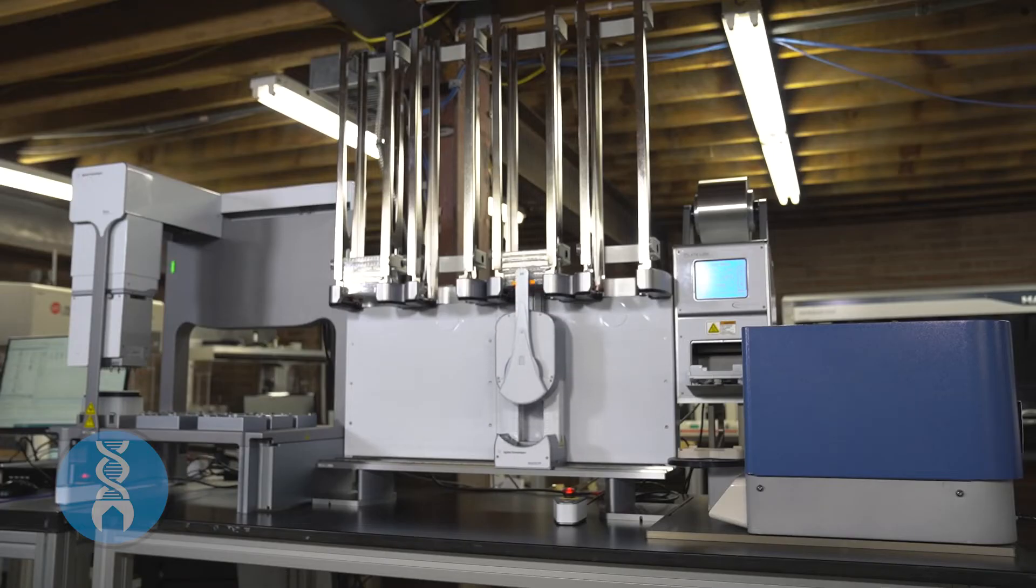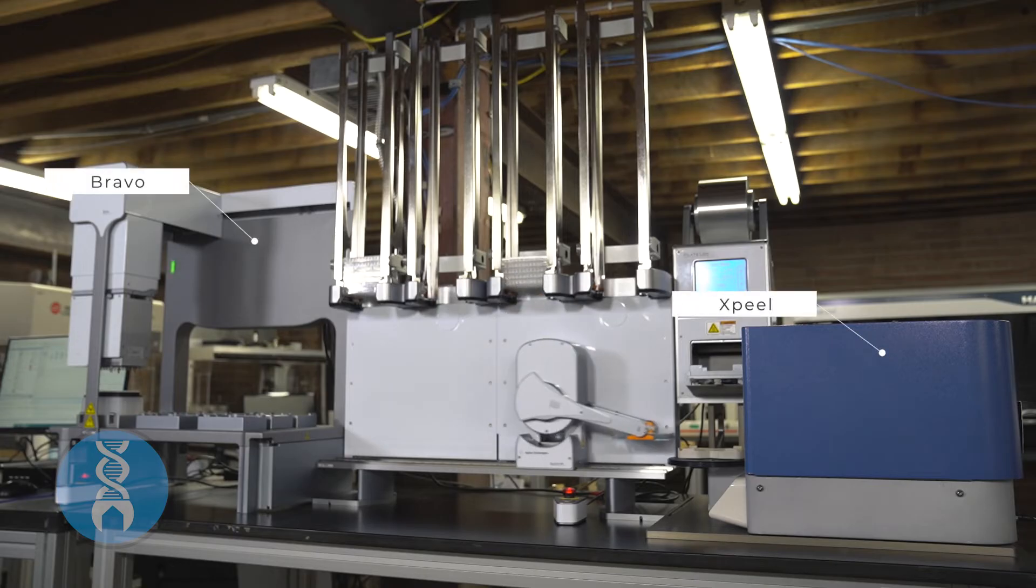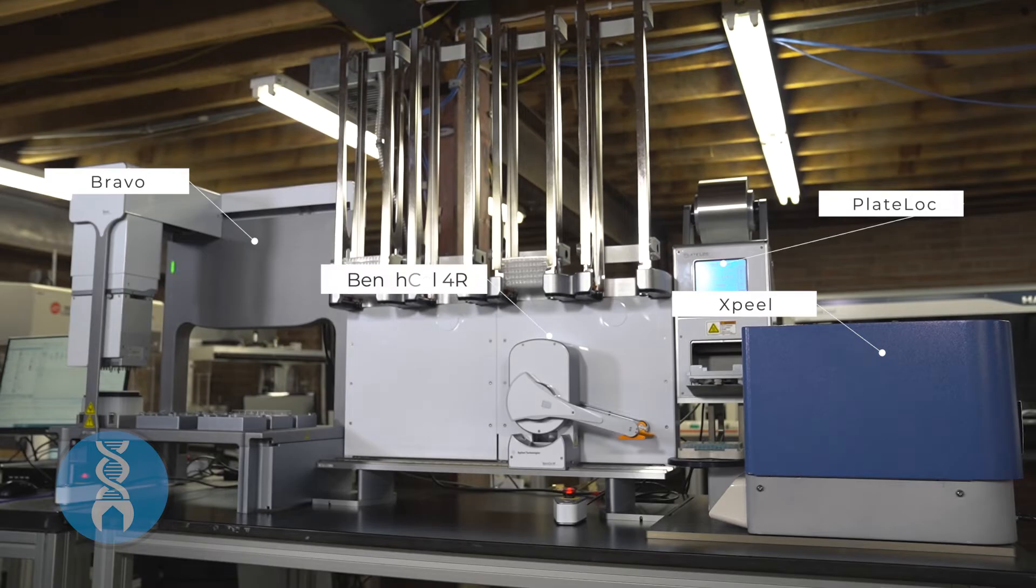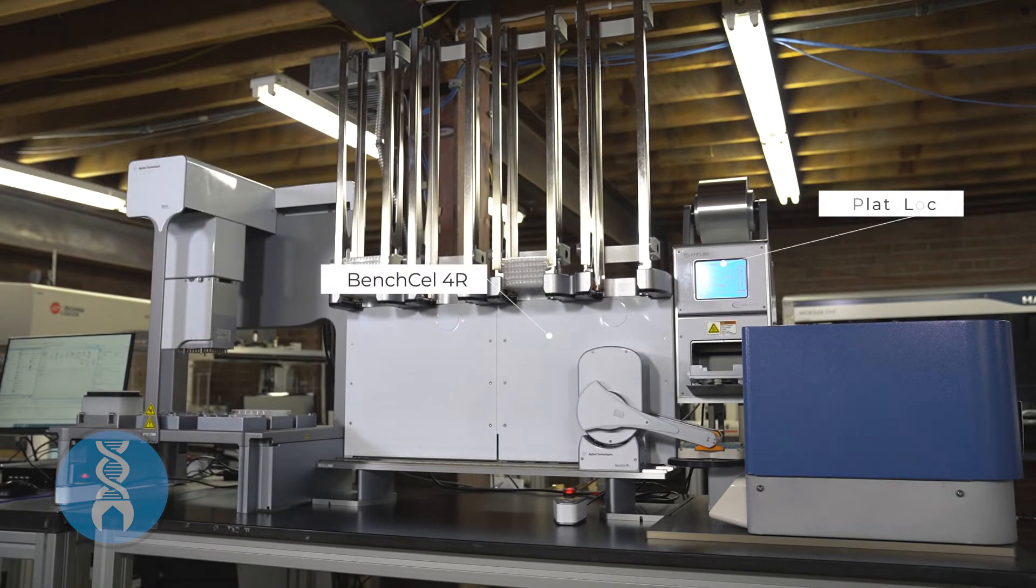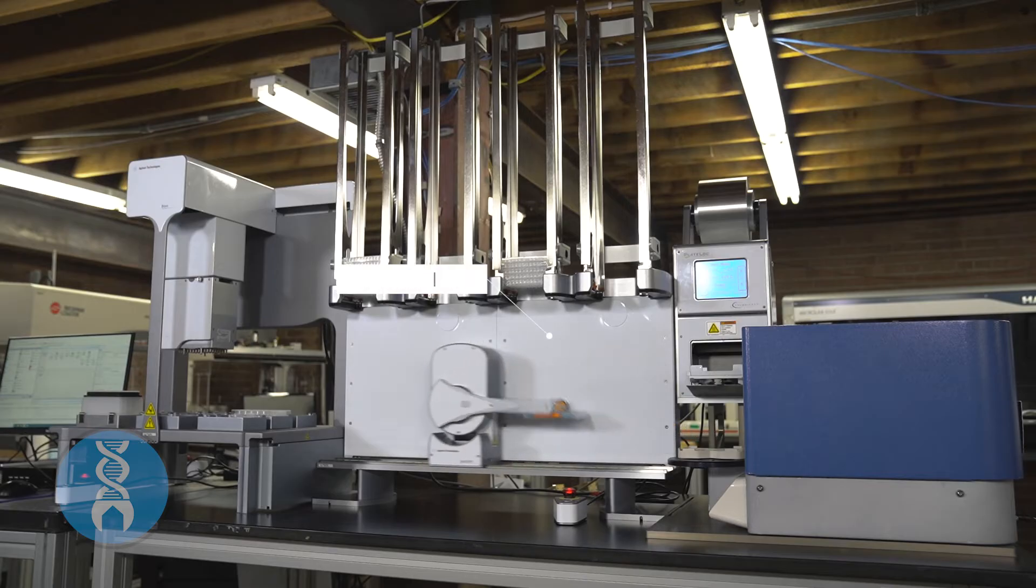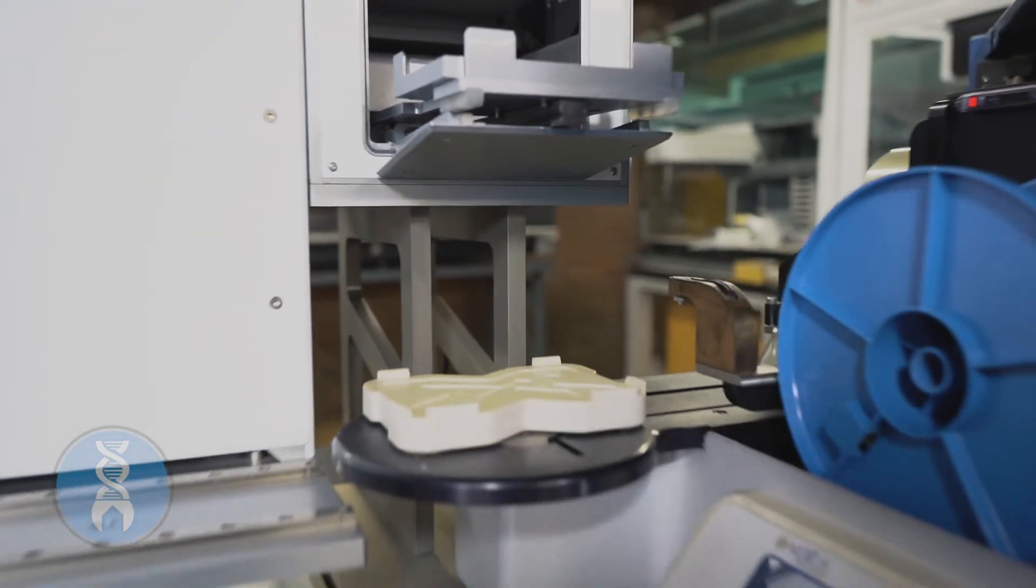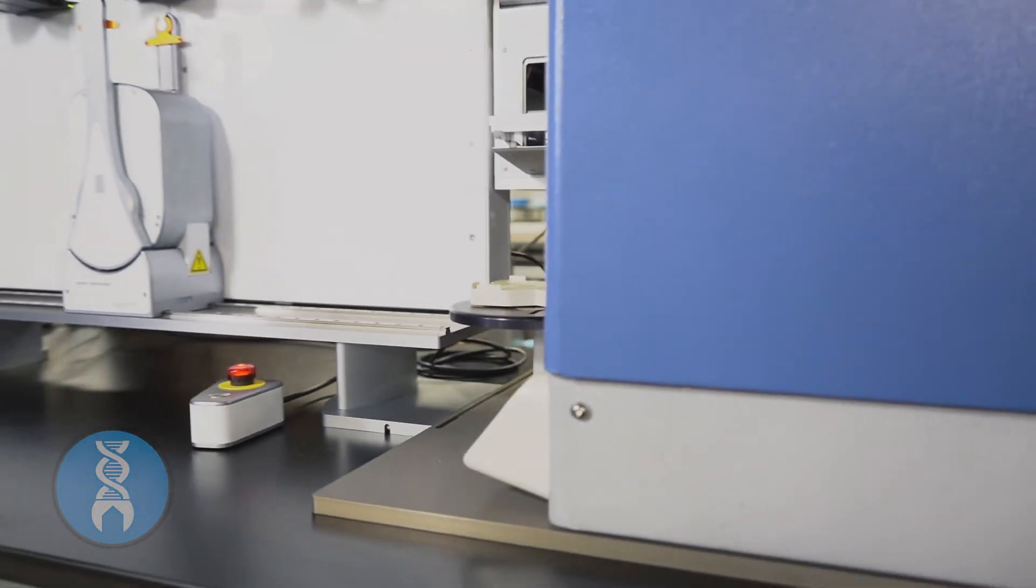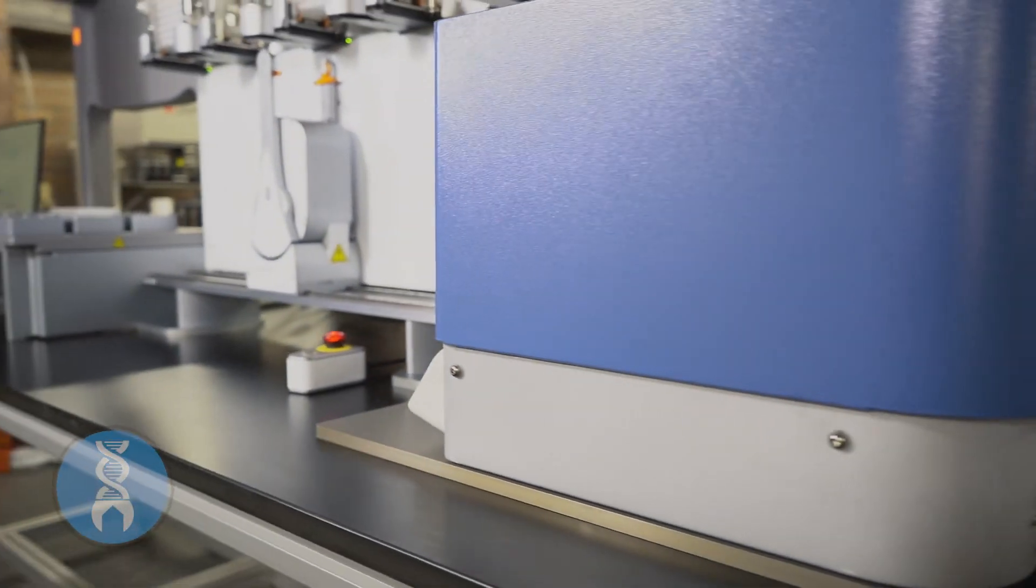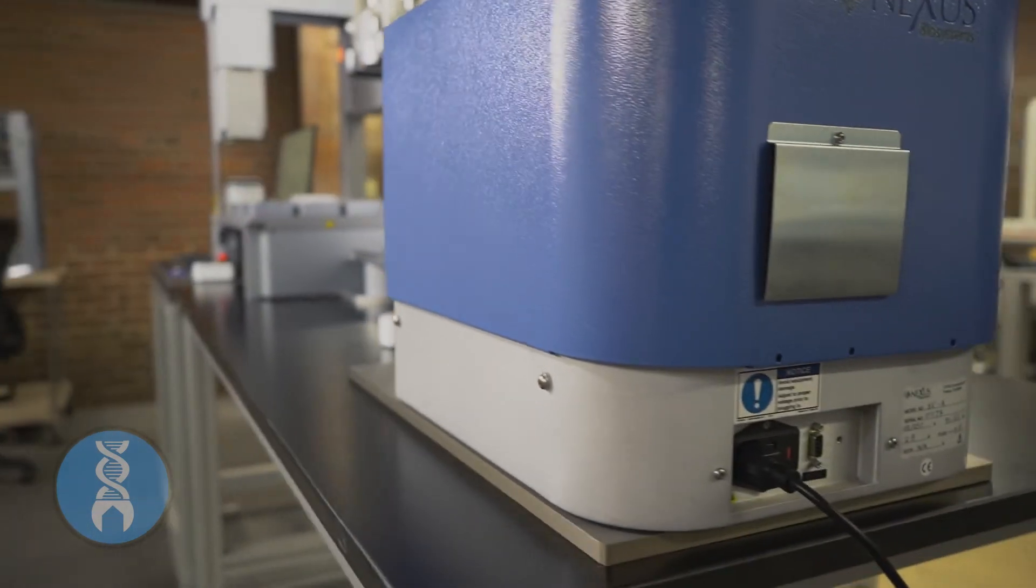In the examples shown here, we've integrated an X-Peel, a Bravo liquid handler, a plate lock, and a BenchCell 4R to unseal a plate, perform a simple transfer, reseal the plate, and stack it. This is all achieved with a custom integration plate designed by DCM BioServices that allows the X-Peel to work in concert with the Agilent Velocity 11 instruments.